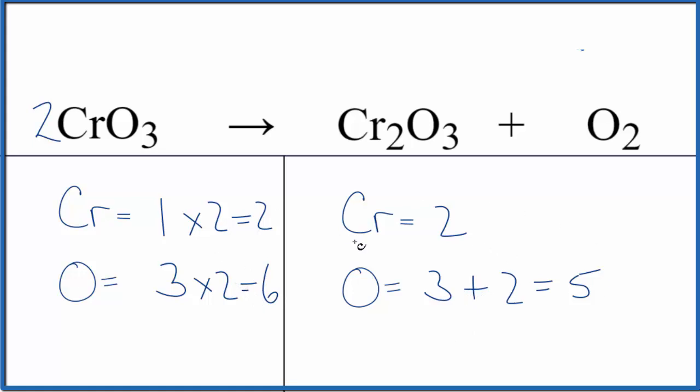So that doesn't solve our problem. This isn't balanced. Looks like we'll need to get an even number of oxygens here in the products. So why don't we put a 2 in front of the Cr2O3, 2 times 2, that'll give us four of the chromium atoms.